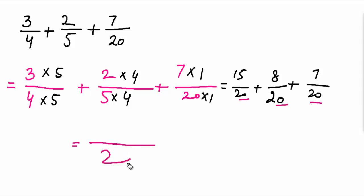15 plus 8 plus 7, and after adding 15, 8, and 7, it would be 30 over 20. So we can cancel the zeros, the answer is 3 over 2.